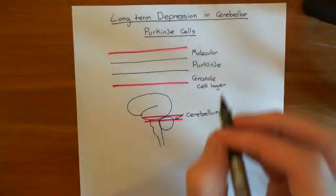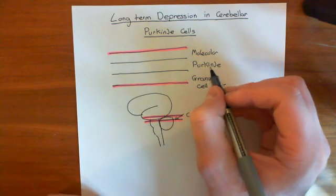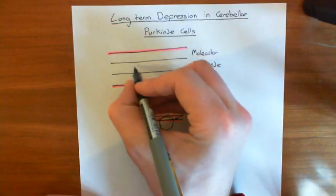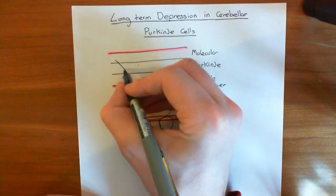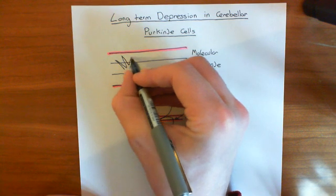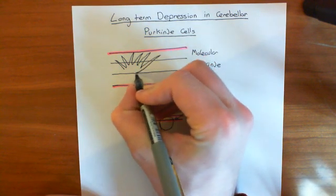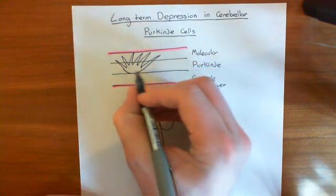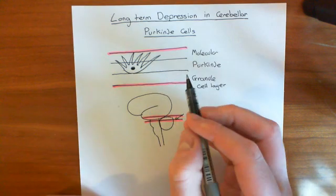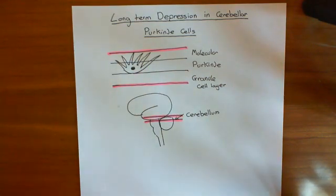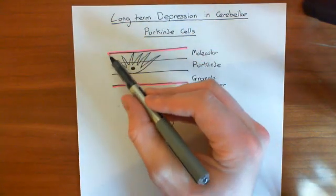Well, let's start with the Purkinje cell. Purkinje cells are absolute giants of cells - they are enormous great big things. They have huge great dendritic trees extending up into the molecular layer. I do recommend that you Google Purkinje cells - you can see a picture of one of these down the microscope. They look utterly incredible, with this huge tree network of dendrites going into the molecular layer.